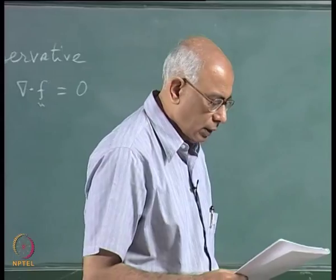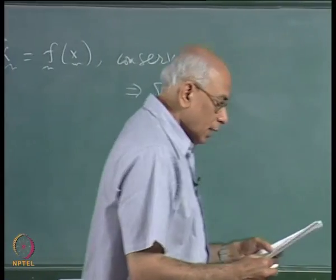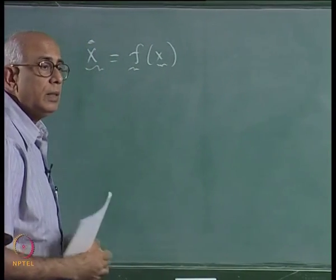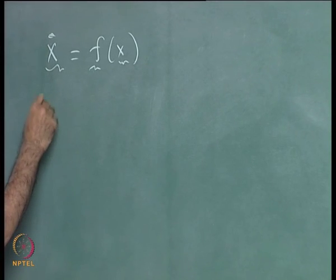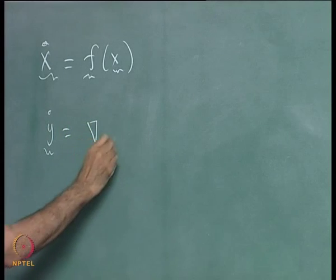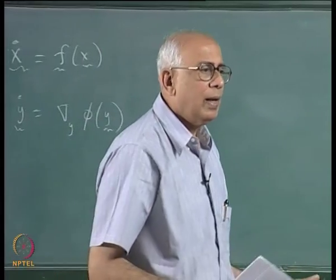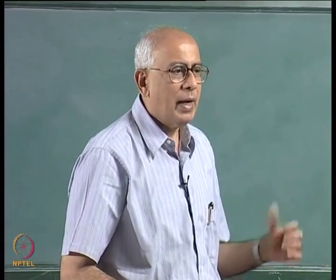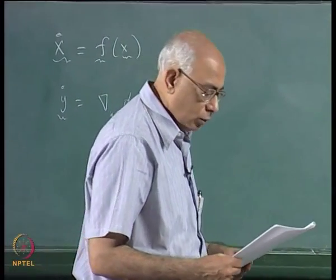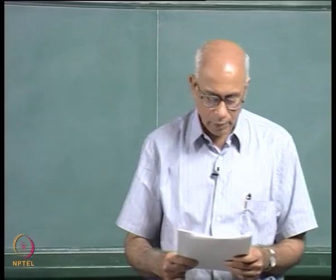The next statement: every dynamical system ẋ = f(x) can be transformed into a gradient system ẏ = ∇_y φ(y) by a suitable choice of variables. This is false. It would imply that every vector field can be written as the gradient of a scalar, which is certainly not true. Not every dynamical system can be transformed to a gradient system by a change of variables.